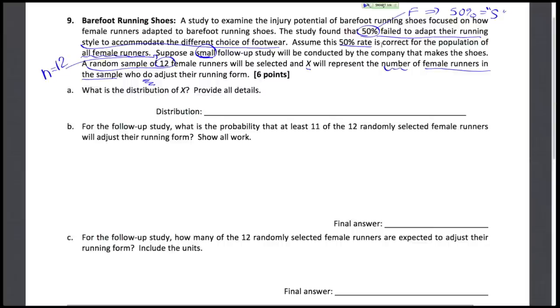We're asked to give specifically what is the distribution of this quantity. X is counting the number of female runners in our sample who do adjust, counting the number of successes in our sample of size 12. The count variable for the number of successes in a random sample follows what we call a binomial distribution.